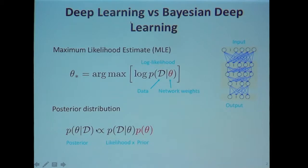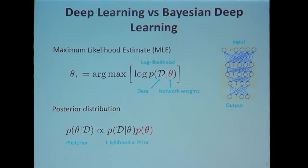This distribution is the posterior distribution, usually found using Bayes' rule. The advantage — which the previous two speakers already discussed — is that you can have some estimate of uncertainty, giving you an idea about how much you don't know about your network weights.